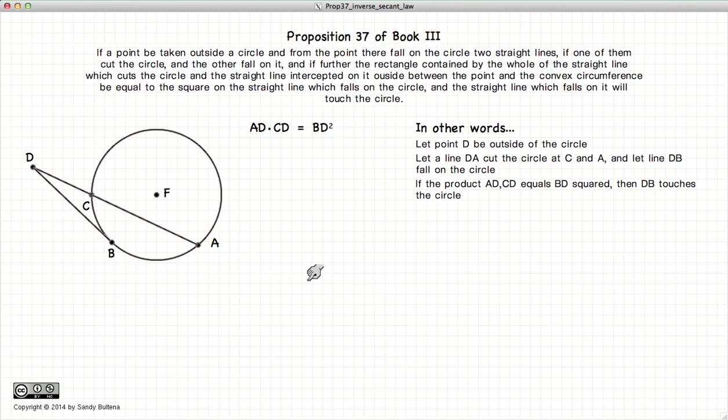This video presentation is going to be on Proposition 37 of Book 3, which states that if we have a circle and a point outside the circle, if we have a line DB that falls on the circle and another line DA that cuts through the circle, if the condition AD times CD is equal to DB squared,